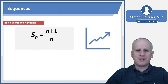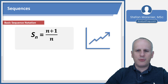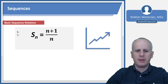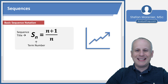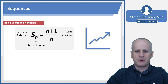First we have to define how sequence notation works. Here you'll see a sequence named s, where n is the subscript indicating the term number, and it's equal to n plus 1 over n. So s is the sequence title — just the name. The subscript, whether it's n or some number or another variable, is the term number in the sequence. Whatever is to the right of the equal sign is going to be your term value.